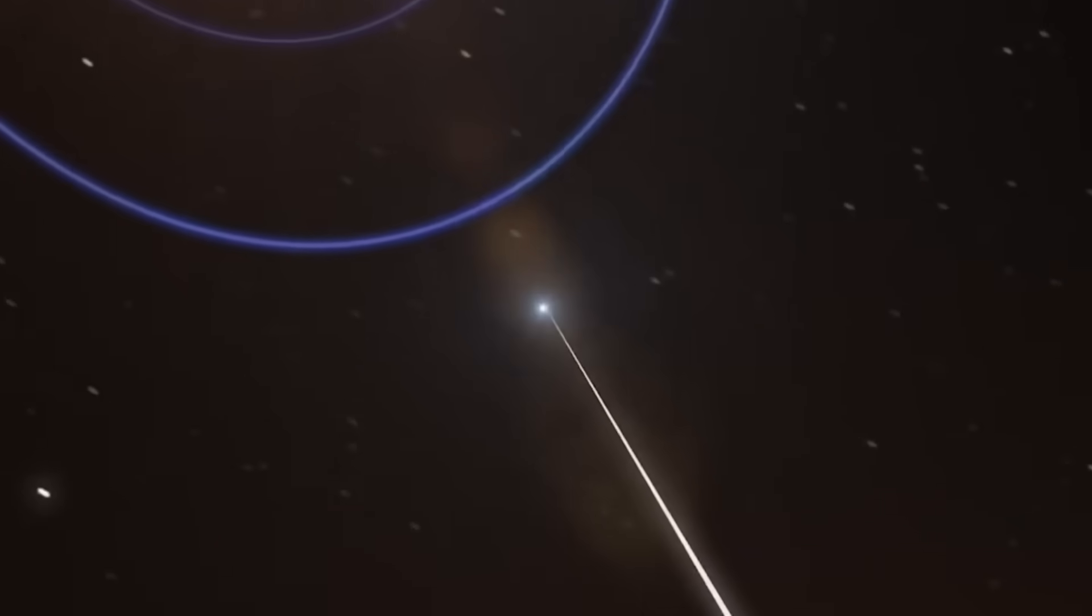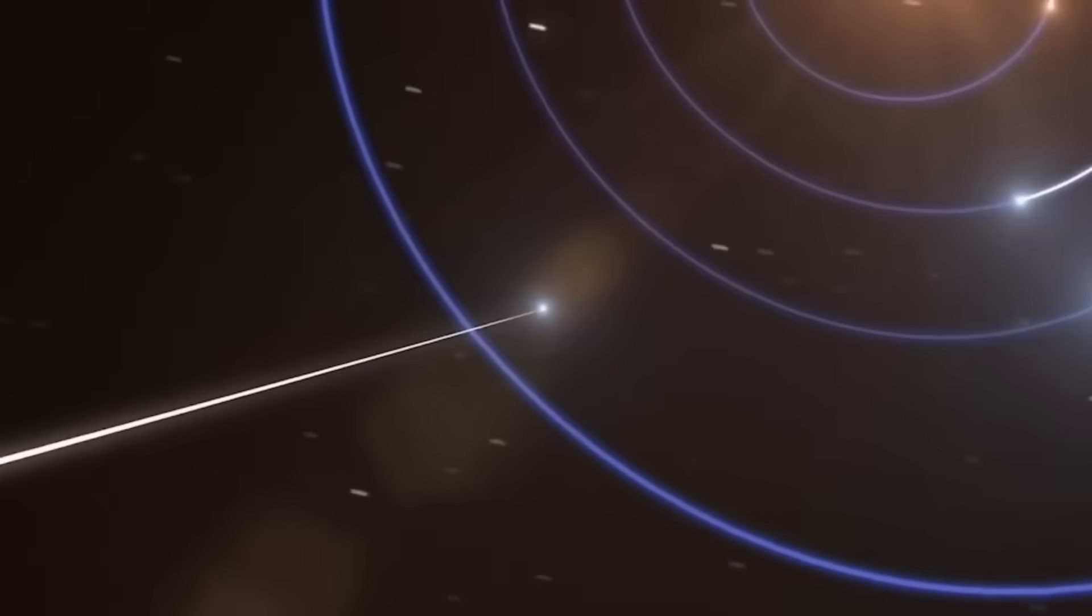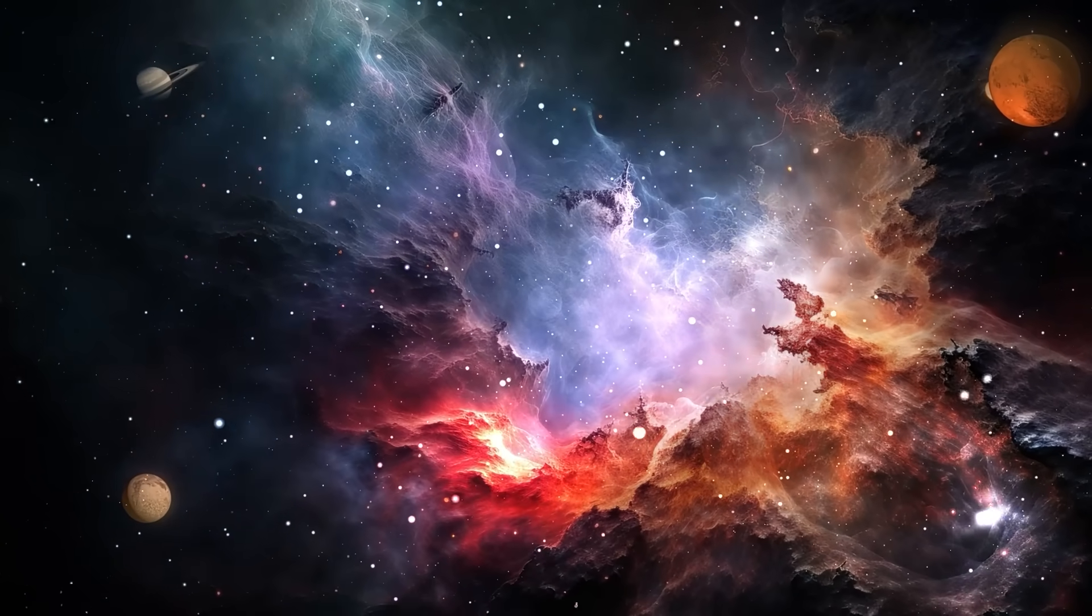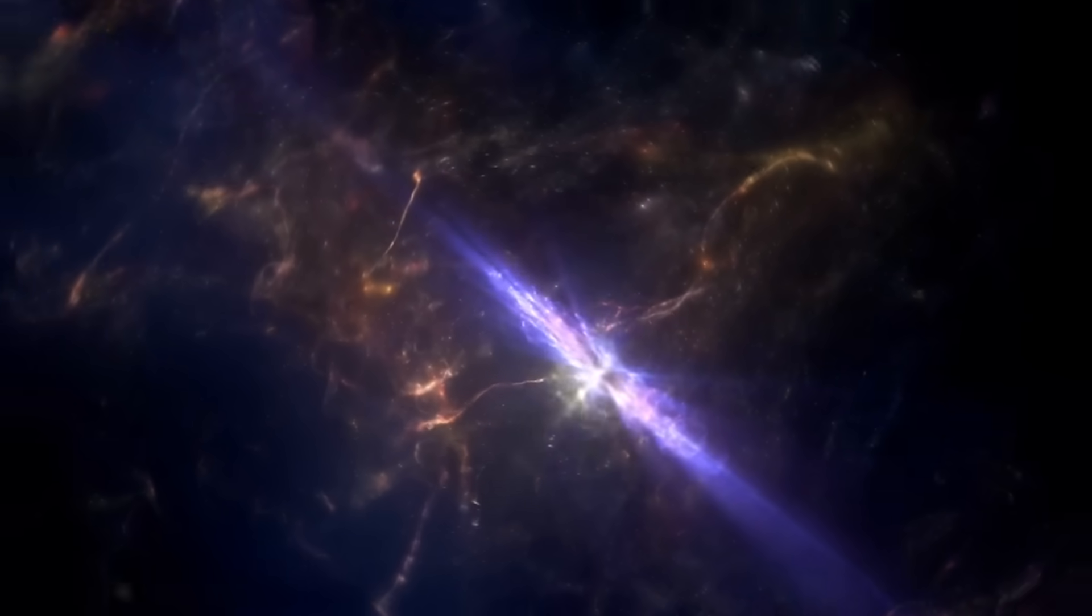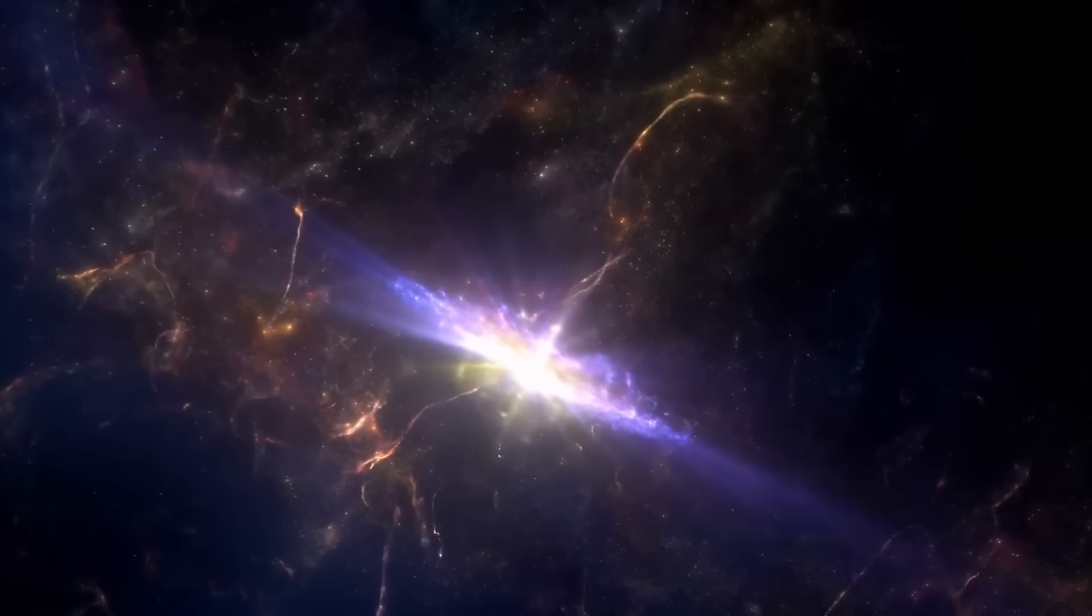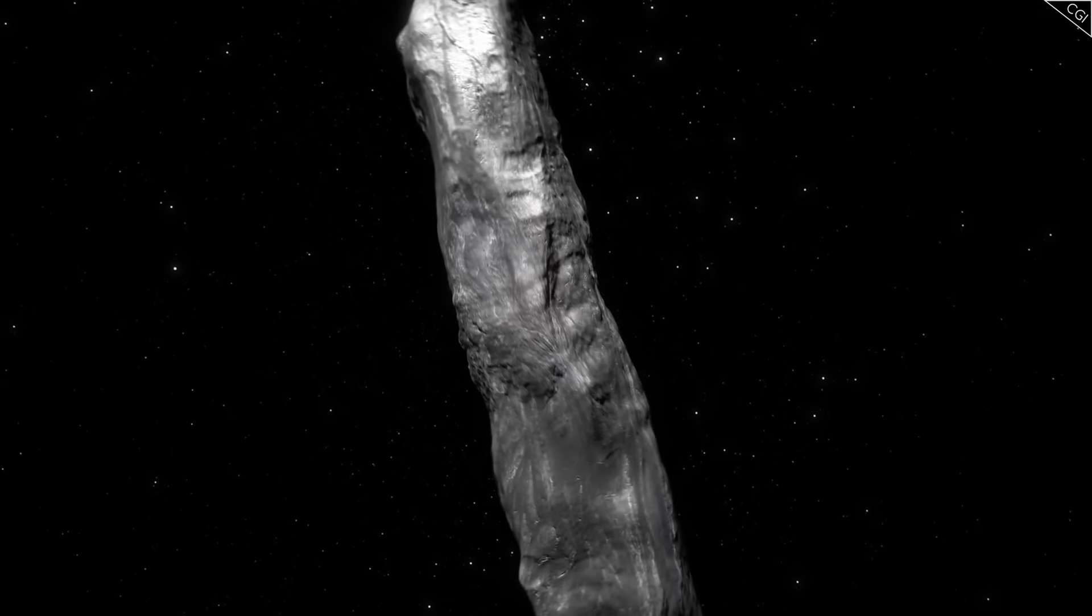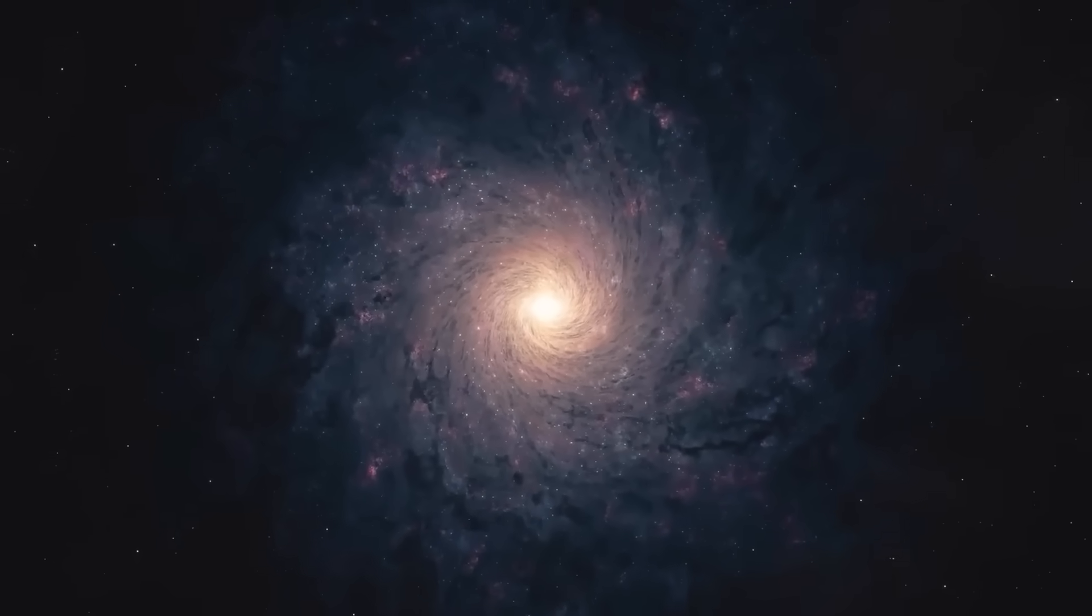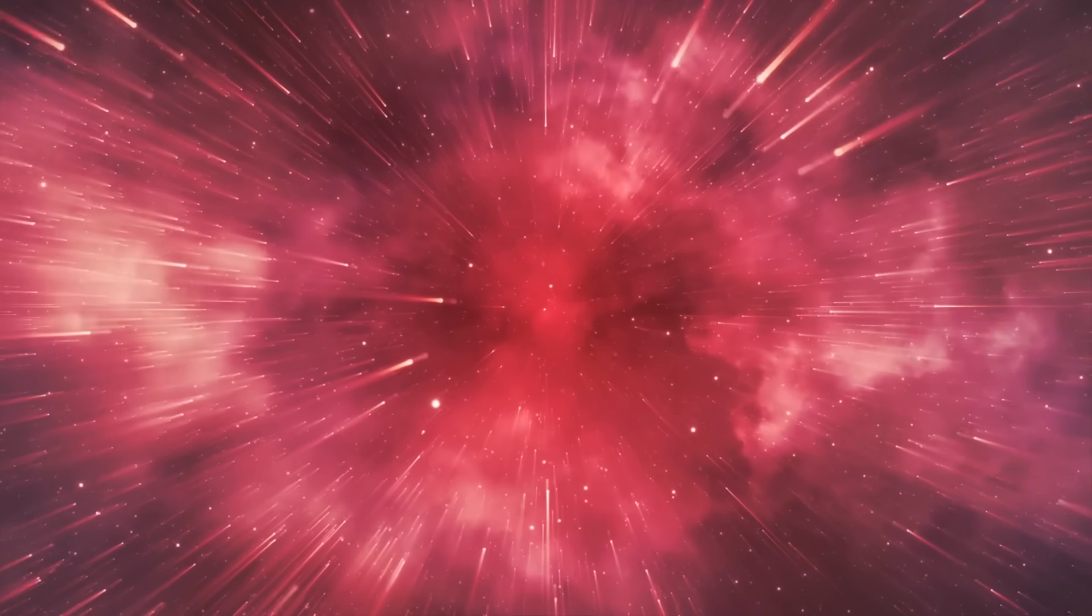Everything came to a head when 3I Atlas reached a position known as nodal alignment, the point where its orbital plane intersected Earth's. At that moment, every telescope, radio dish, and orbital observatory trained on it simultaneously registered a surge in intensity. The pulse frequency increased, the secondary companion brightened, and the region surrounding both objects filled with a faint halo visible even to amateur astronomers. It wasn't sunlight. It was internal luminescence, energy being released from within the structure itself.